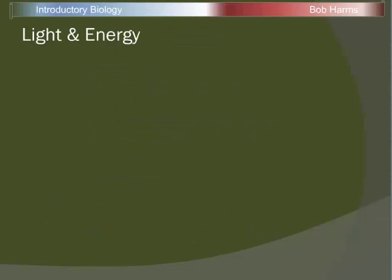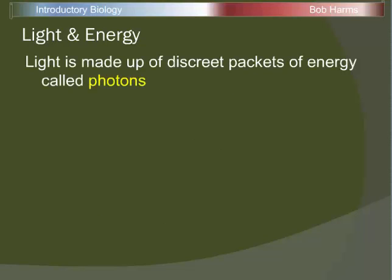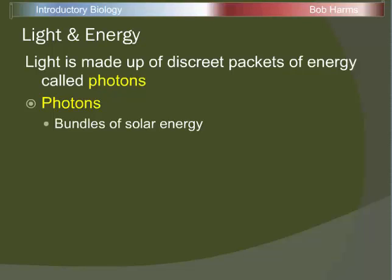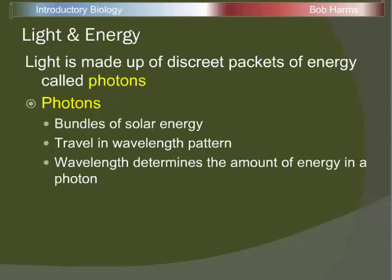Since light is so important to this process, let's talk a little about light and energy. Light from the sun is made up of little bundles called photons — a photon is a particle of light that contains energy. Not every photon is created equally; different photons have different amounts of energy. These photons travel from the sun to the earth in a wavelength pattern — not like a beam or straight line, but more like a wave. Depending on how much energy is in a photon, that determines its wavelength. High-energy photons travel in very short, quick wavelengths; low-energy photons travel in long, slow wavelengths.